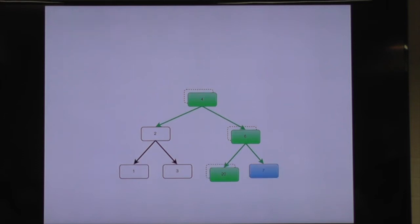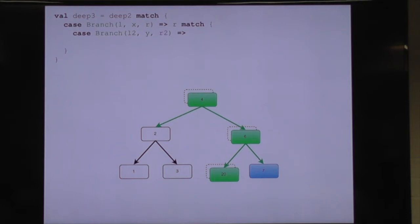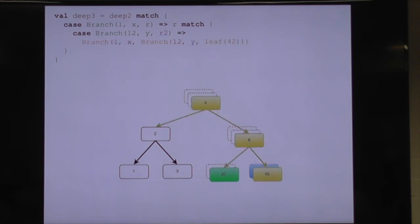What if we want to replace another node in this tree? Maybe we want to replace that 7. We'll do pretty much the same thing again — pattern match on the root of the tree, take our right subtree and pattern match on that, get the right subtree of that which is the node with the 7, construct a new node with a better value. 0.2 is better than 7. Then rebuild up the spine of the tree. Now we have our new tree with both of those elements replaced.